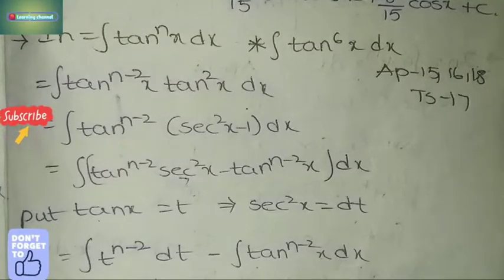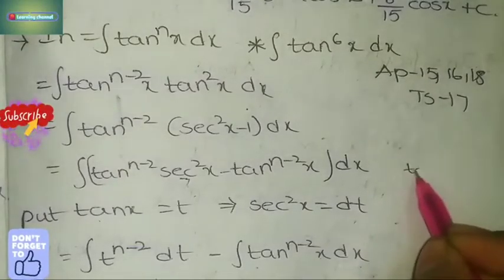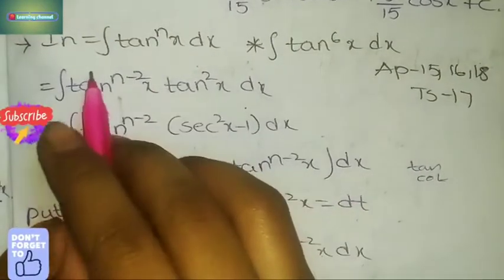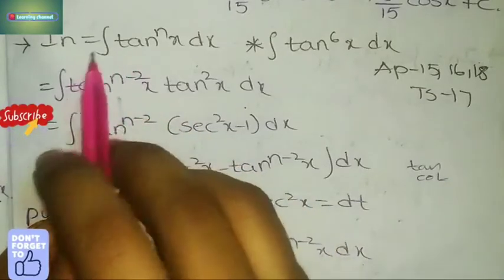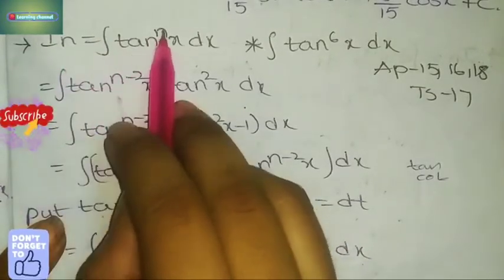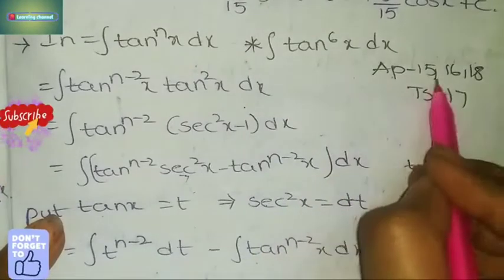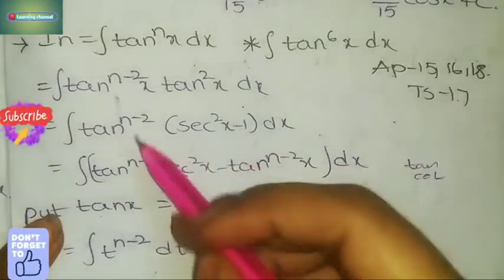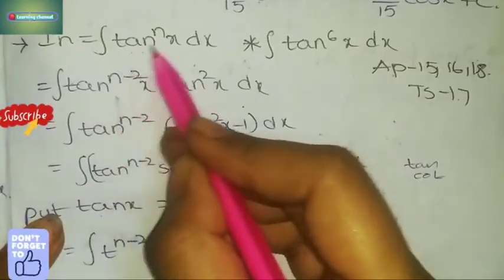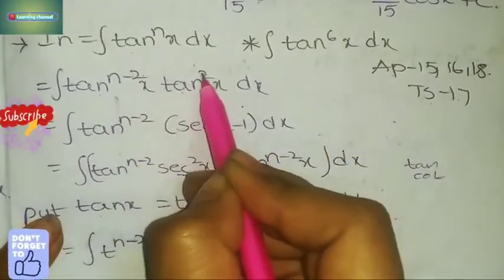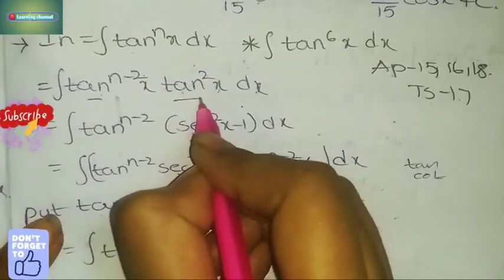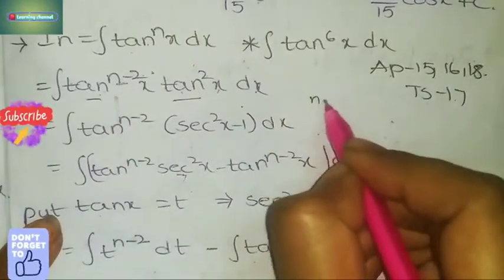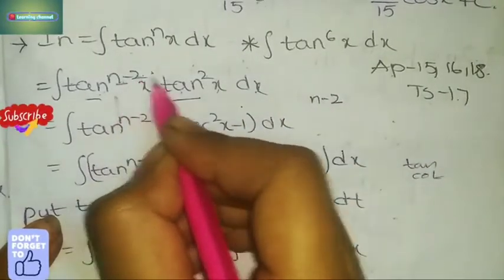Introduction to the reduction formula for tan and cot. First, tan — it is very easy compared to other reduction formulas. I_n is equal to integral tan^n x dx. This formula has appeared in AP 15, 16, 18 and TS 17 exams. We write tan^n x as tan^(n-2) · tan² x, and adding powers: n-2 plus 2 gives us n, so we get tan^n x.